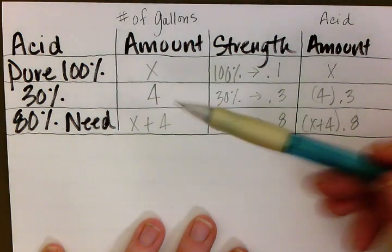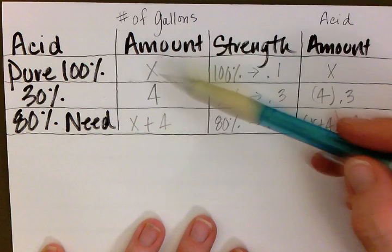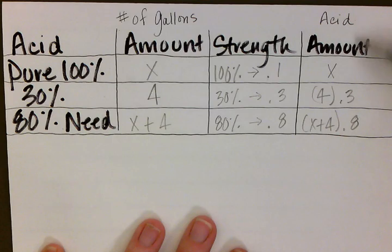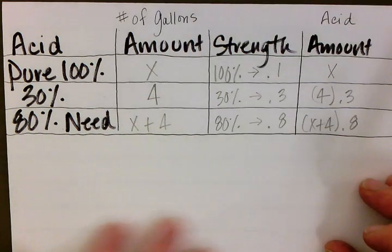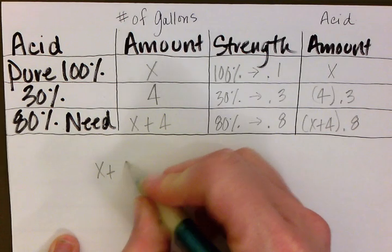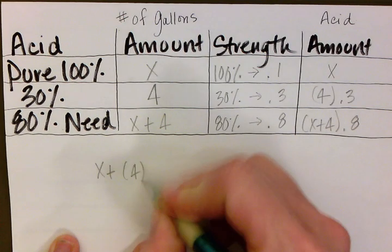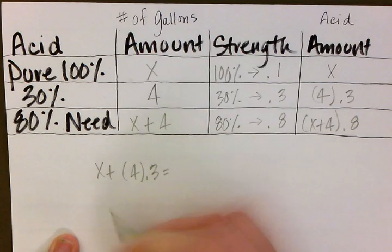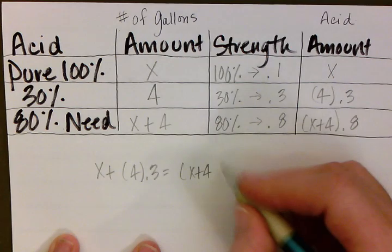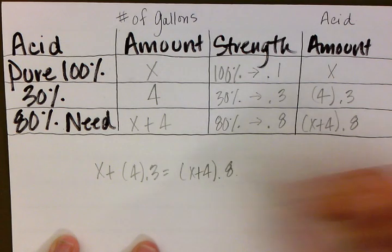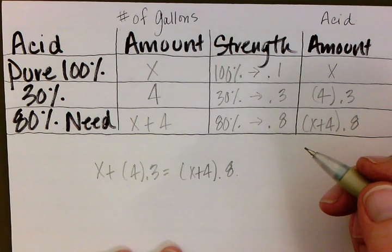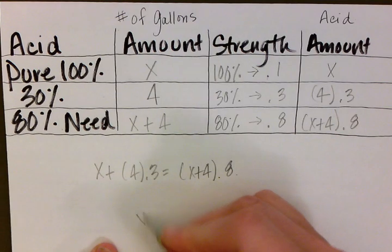Because we needed to add the amounts of gallons together, we're going to add the amounts of acid together in the same way. So we have x plus 4 times 0.3 equals x plus 4 times 0.8. When we solve for x, we get x equals 10.